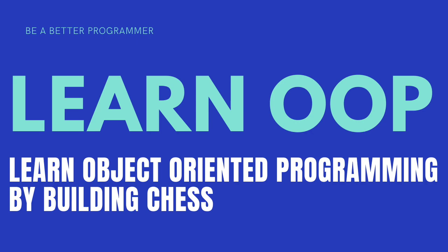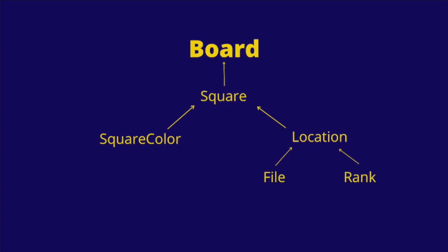In this video, we're going to design the most crucial part of the game, which is the board. What I have here is a class diagram where the top-level class is going to be our Board class, which is composed of a list of squares. Each square is going to have an enum for square color and a location. A location is also going to have a file and a rank. The file is the column and the rank is the row. We're going to start by creating the file and rank objects, then the location, and then the square, square color, and ultimately the board.